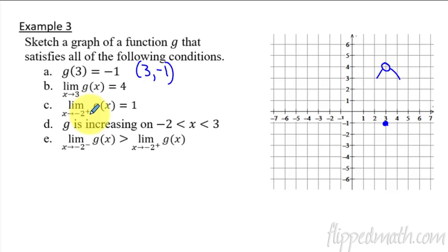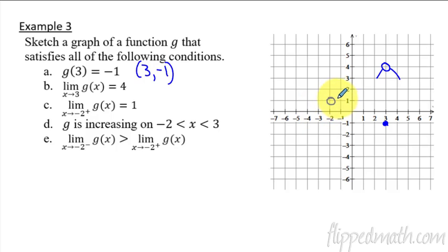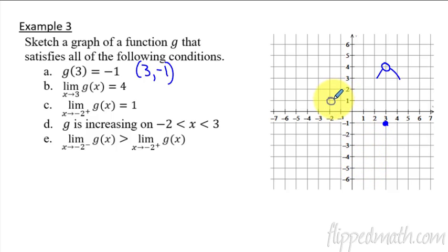The limit as x approaches negative 2 from the right side equals 1. So at x equals negative 2, coming from the right side, it should approach y equals 1 — we put an open circle there since open or closed isn't specified. The next condition says g is increasing from negative 2 to 3, meaning between those x values the graph must be going upward. So we connect the graph going up from near negative 2 up toward the open circle at (3, 4).